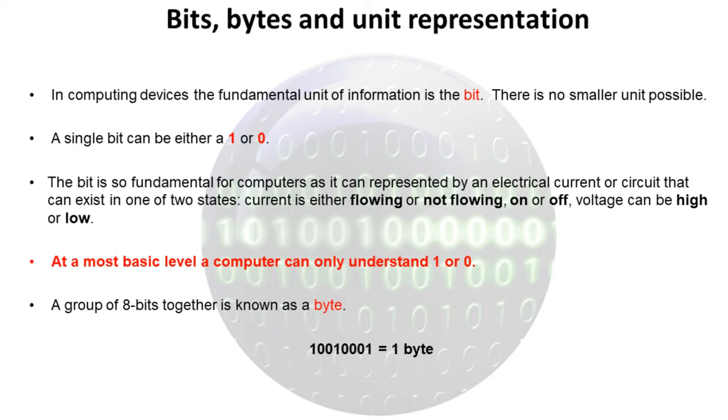The bit is so fundamental for computers as it can be represented by an electrical current or a circuit which can exist in one of two states. At a very high level you can think of the current as either flowing or not flowing, being on or off, the voltage being high or low. So at a most basic level a computer can only understand 1 and 0.